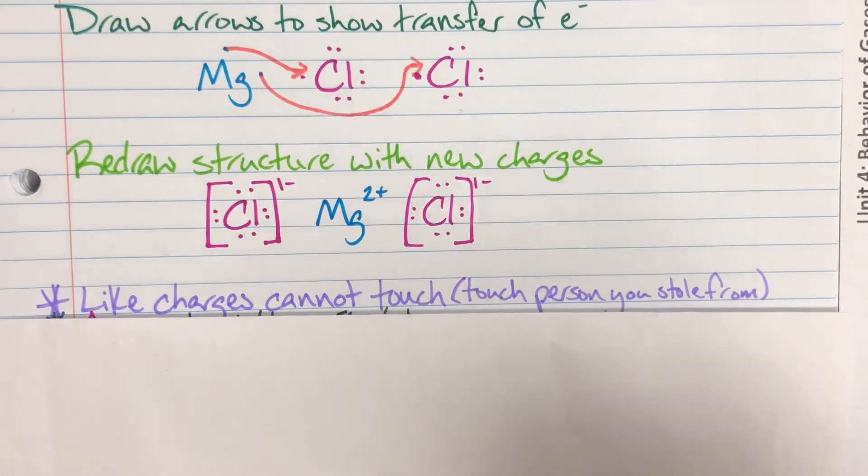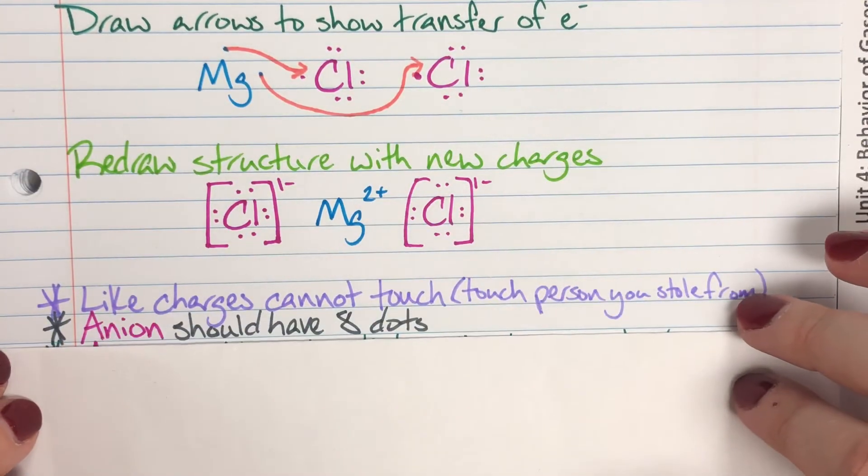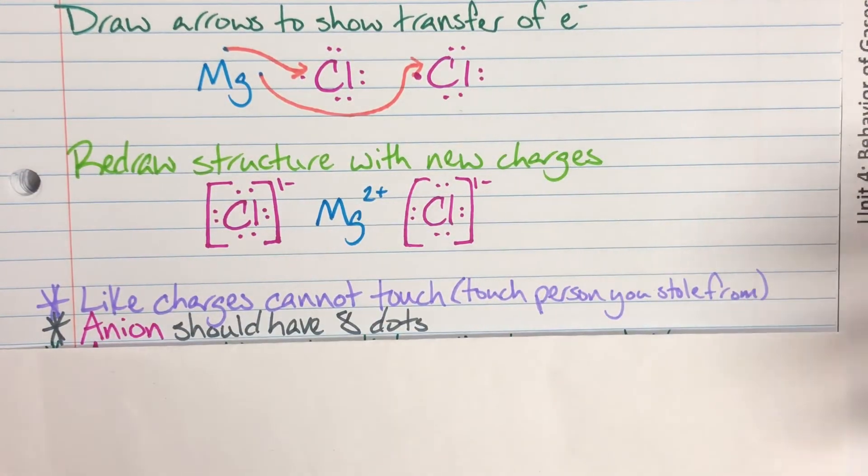Instead, I am touching the person that I stole from, which was that magnesium. My anion should always have eight dots, and that is going to be because it worked really hard to steal that last valence electron, and the whole reason it's an anion is to get to that octet, so it's going to make sure that it has those eight dots in that final structure.